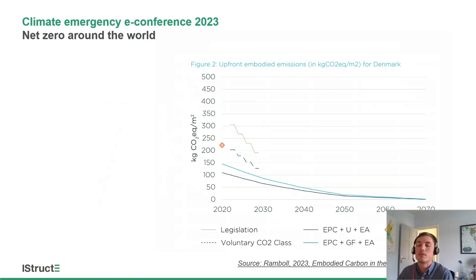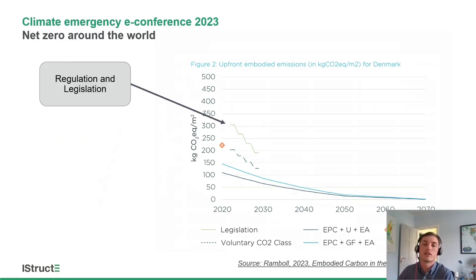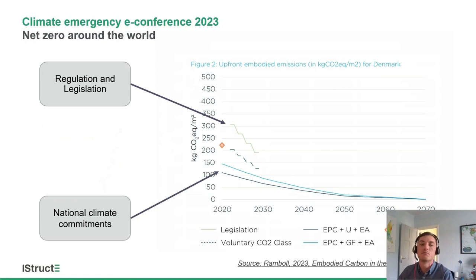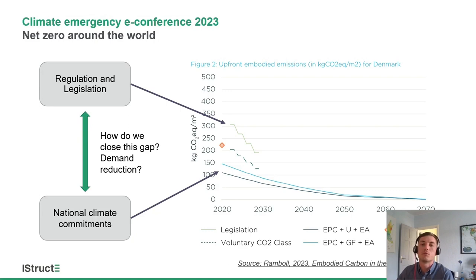But is that actually going to be enough? We've done work mapping national climate commitments and carbon budgets to the legislation currently in place — specifically in Denmark. The legislation has set carbon targets at around 300 kg CO₂e/m² reducing over time, and the voluntary scheme sits a bit lower. But depending on exactly how you allocate the carbon budgets, it suggests we're some way off getting it as low as we really need to be to hit national climate commitments and hopefully align with the 1.5°C pathway. There's a gap between what legislation requires and what we actually need to do.